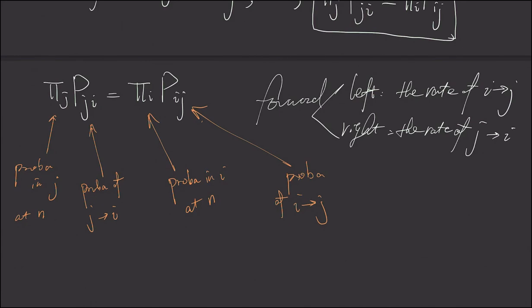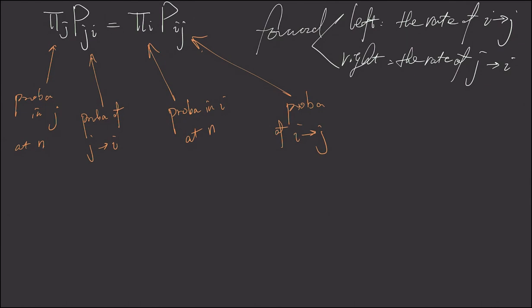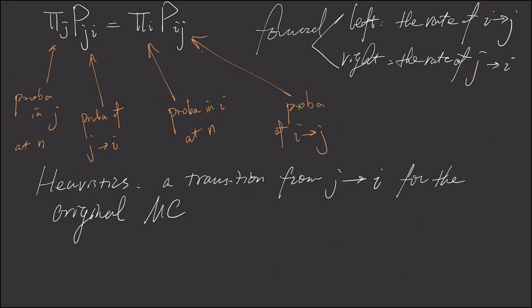And this tells us, heuristically speaking, here I'm going to use some heuristics. The heuristics is a transition from j to i. So, for the original Markov chain, the forward one, is,